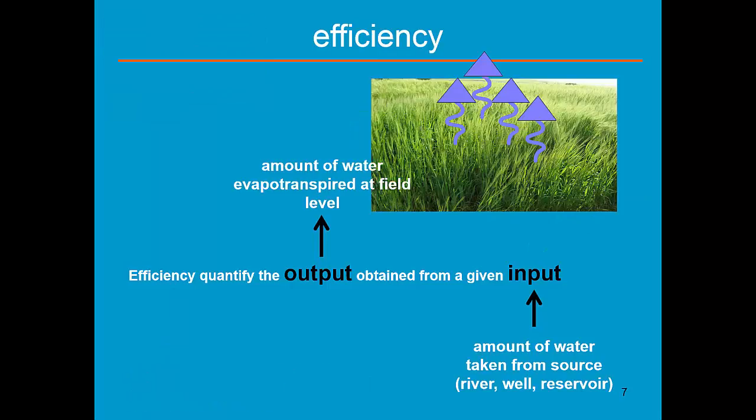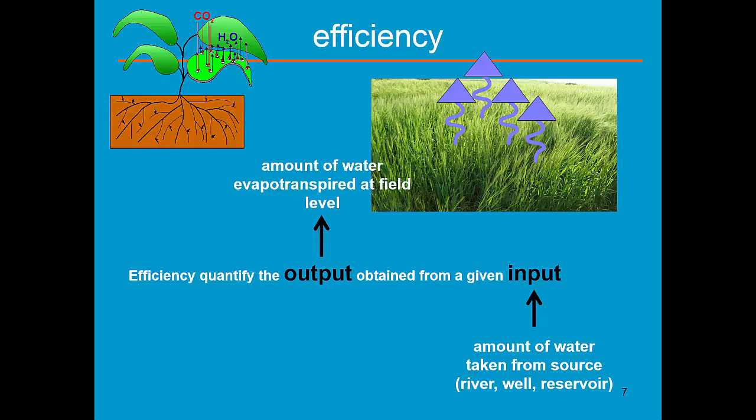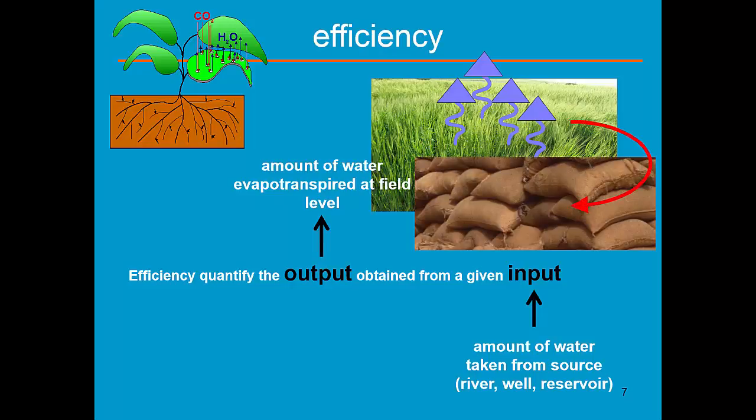During the process of evapotranspiration, the stomata are open and a lot of CO2 can be taken up. And at crop maturity, we will have crop yield.